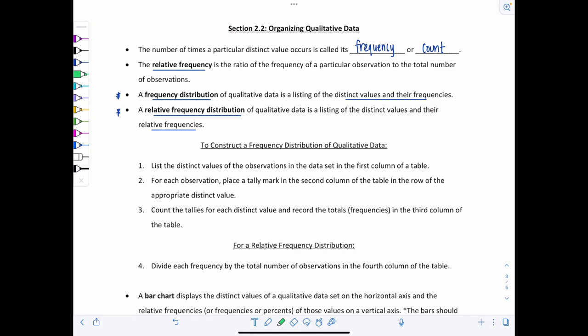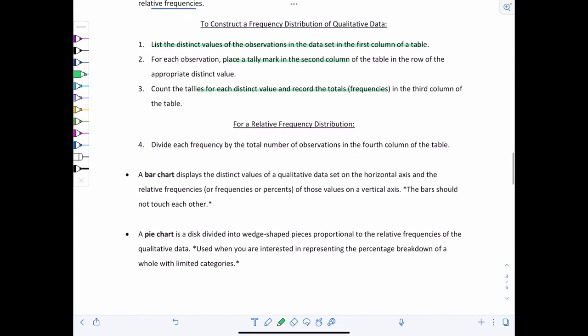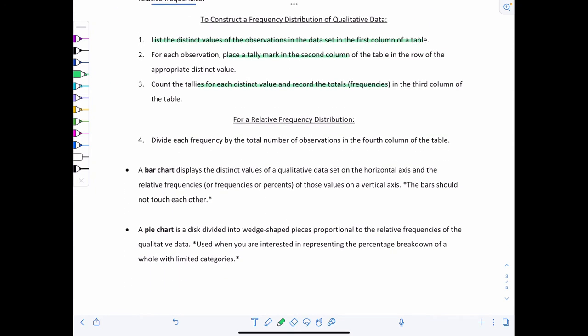Now the relative frequency is the ratio of the frequency of a particular observation to the total number of observations. So relative frequency lets you know how often a certain characteristic is observed, a certain data value appears compared to the total number of values that were collected. A frequency distribution of qualitative data is a listing of the distinct values and their frequencies. The only difference would be on the y-axis for a frequency distribution, you would list the frequencies. A relative frequency distribution would just list values between zero and one because you're looking at that ratio.